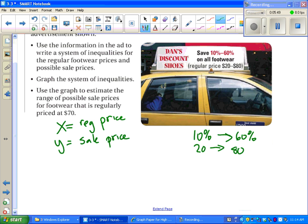If we're going to try to figure out a good range of values for my X values, my cheapest shoe would be my $20 shoe, 60% off. So I might want my X range to be from cheapest. My regular price could be is $20. The most expensive, $80.